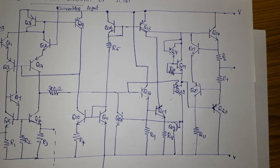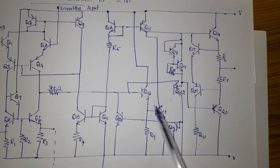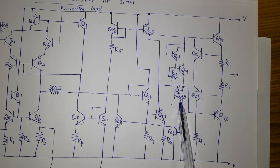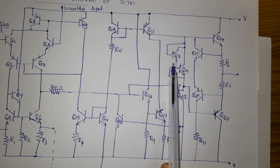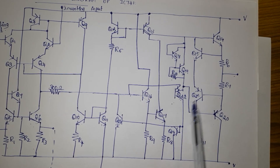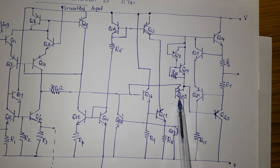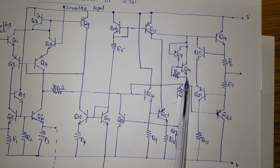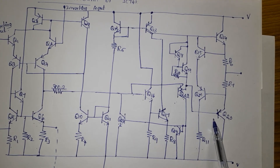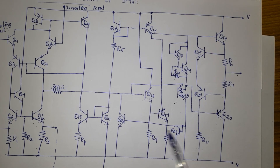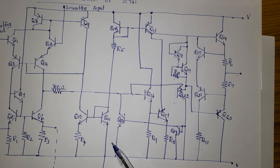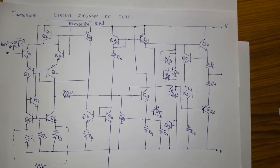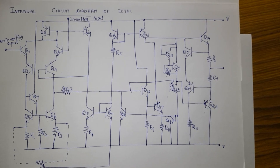This action reduces the emitter current in Q22, which causes the currents in Q18 and Q19 to decrease, which in turn lowers the current in Q14 and Q20. Diode-connected transistor Q24 and Q23 act as temperature compensating diodes. This completes the internal circuit diagram of IC741. Thank you friends.